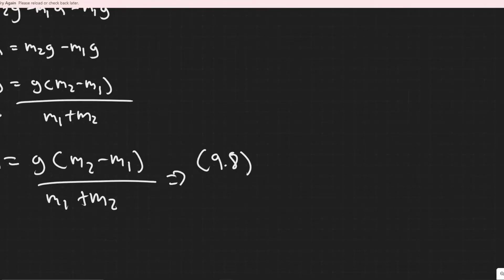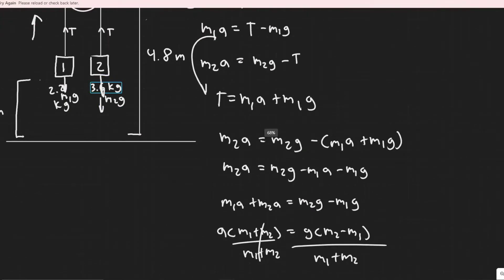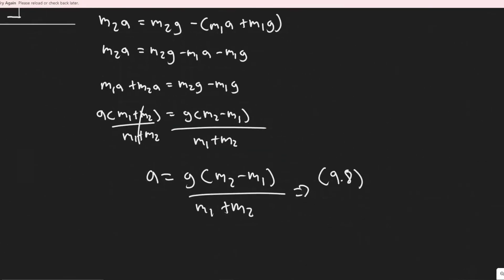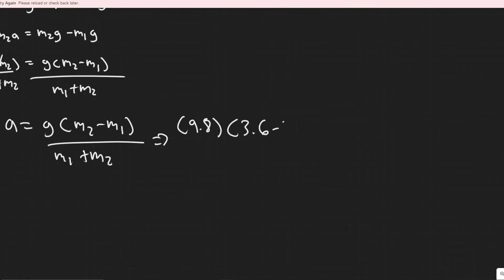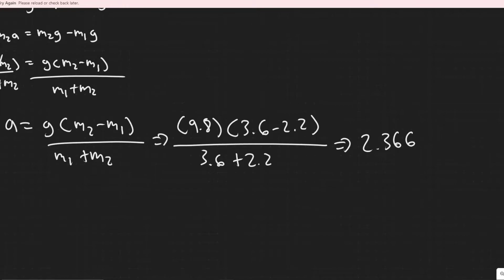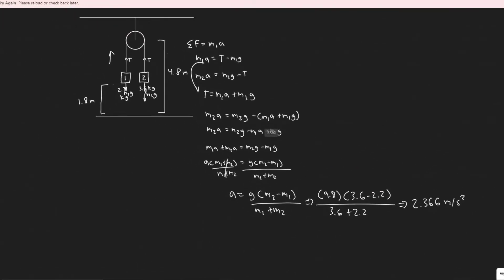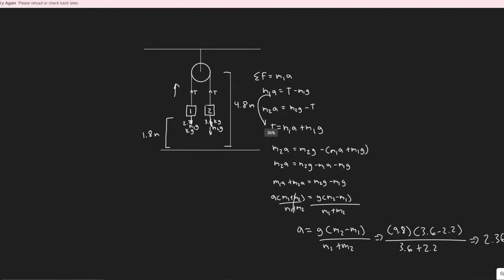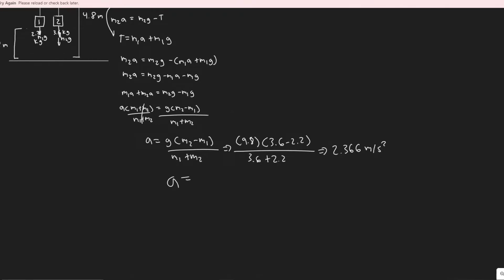Plugging in values: A = 9.8 × (M2 − M1) / (M1 + M2), where M2 = 3.6 kg and M1 = 2.2 kg. So it's 9.8 × (3.6 − 2.2) / (3.6 + 2.2) = 9.8 × 1.4 / 5.8. Performing this calculation gives an acceleration of approximately 2.366 meters per second squared. That's the acceleration of the system, which is what they wanted us to find first.